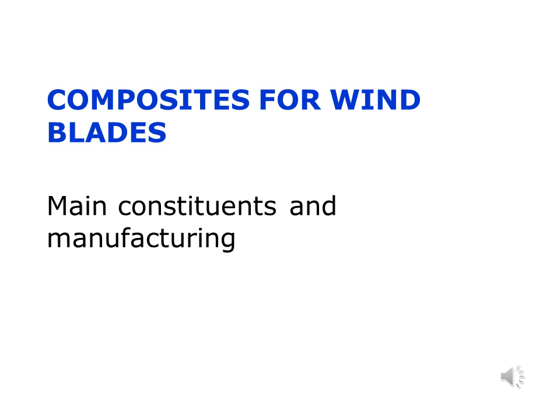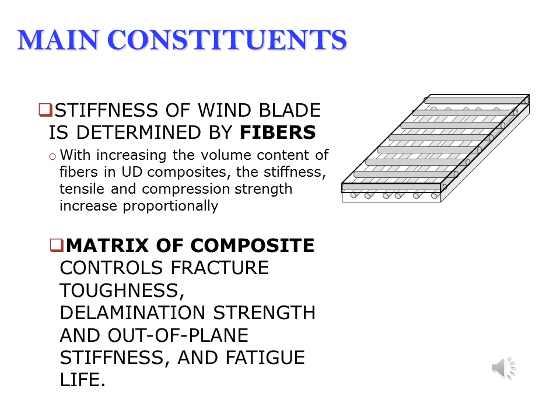Wind blades represent the most important composite-based part of a wind turbine. Blades are produced from long fiber reinforced polymers. In the composites, long fibers ensure longitudinal stiffness and strength, while the resin matrix is responsible for fracture toughness, delamination strength, and out-of-plane strength and stiffness of the composite. With increasing fiber content in composites, the stiffness and strength increase proportionally. But at high volume content of fibers, there might be dry areas without resin between fibers, and the fatigue strength of the composite reduces.